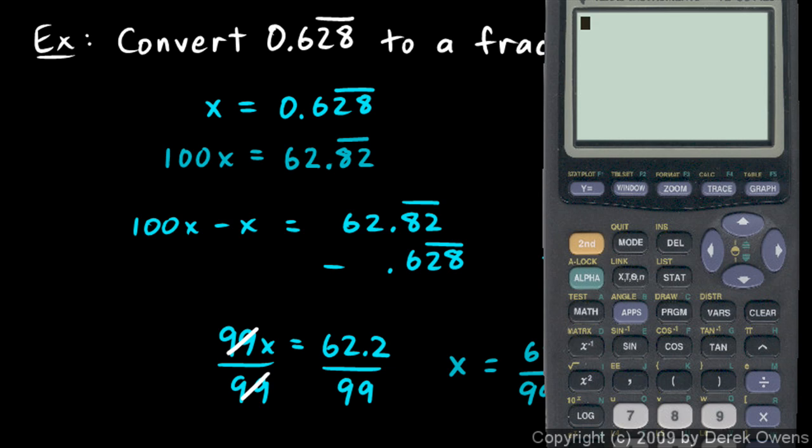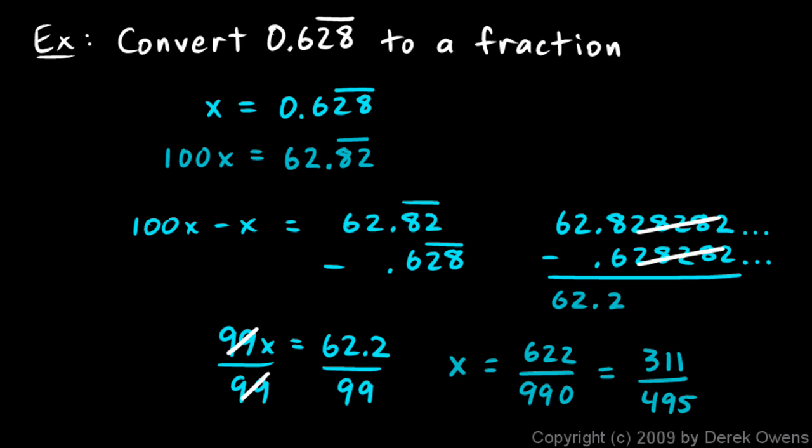We can check this on the calculator again. We want to do 311 divided by 495. And when I do that, there it is, 0.628282828, and so on. It rounded the last digit there, and that's fine. But we do see the pattern, and we're correct. 311 over 495 is our answer.